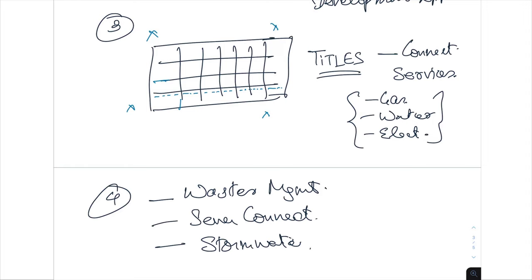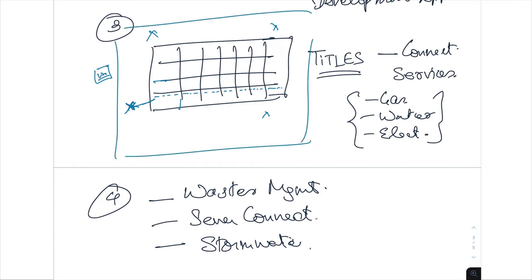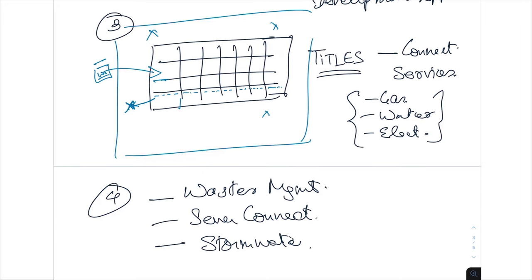Depending on your zoning plan and whatever overlays apply to the site — what you can and cannot do — you will connect to the council's existing infrastructure so that all your waste management, stormwater, and water connections come through. Water authority is usually different from your planning authority, and you need permission from them separately.